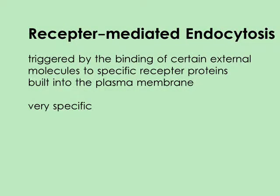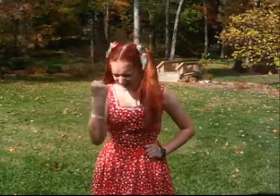However, the third and final type of endocytosis is receptor-mediated endocytosis. It is triggered by the binding of external molecules to specific receptor proteins built into the plasma membrane. So, receptor-mediated endocytosis is specific! That's right, Penelope. That binding causes the membrane protein to transport the specific substance into the cell.